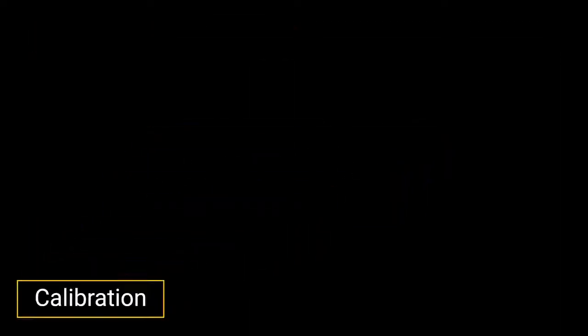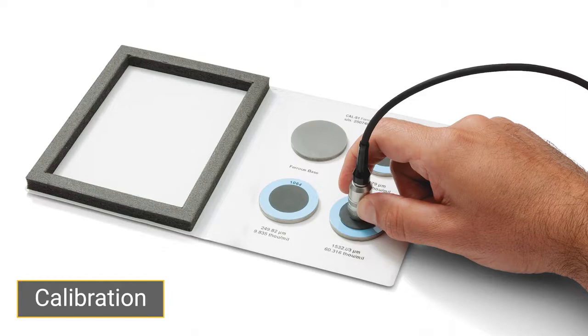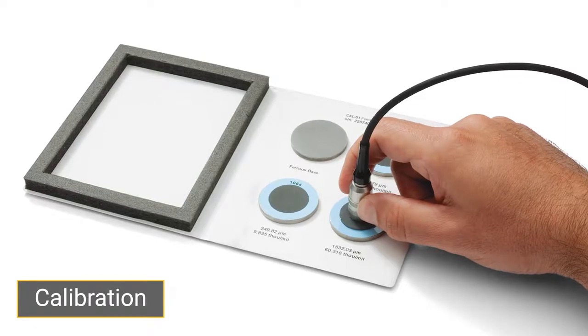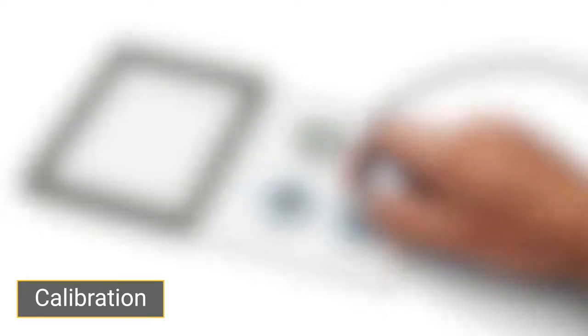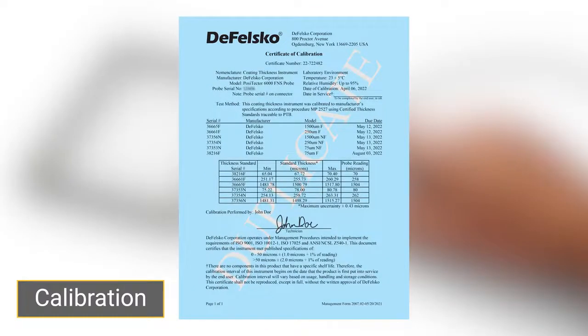Step 1: Calibration. Calibration is performed by DeFelsko or an accredited laboratory and involves taking measurements on traceable standards throughout the range of the probe under controlled conditions. The result is a long form certificate of calibration which is included at no charge with every PosiTector 6000.